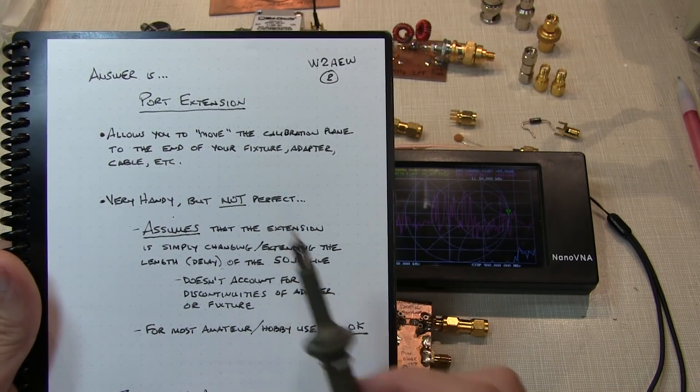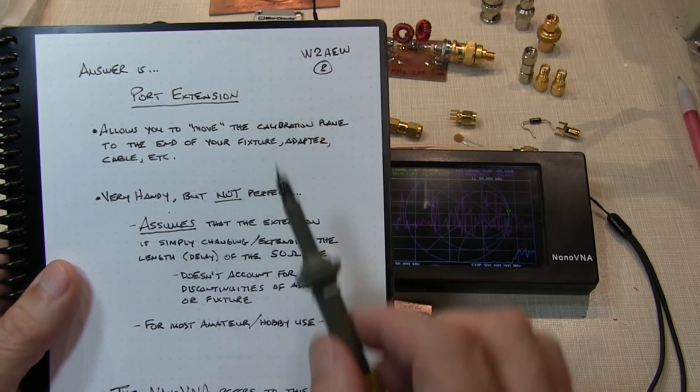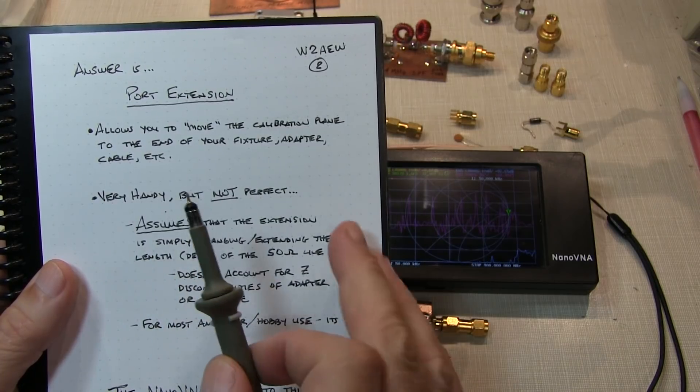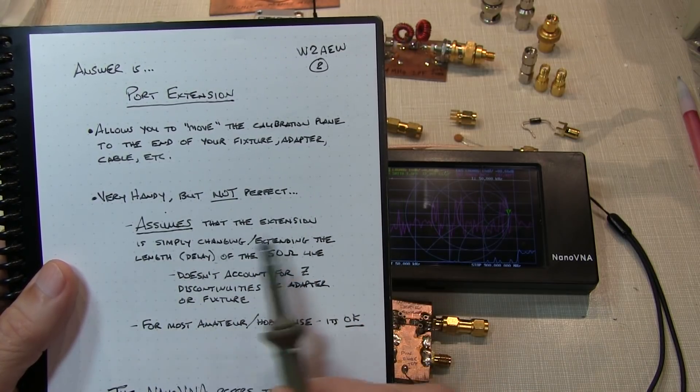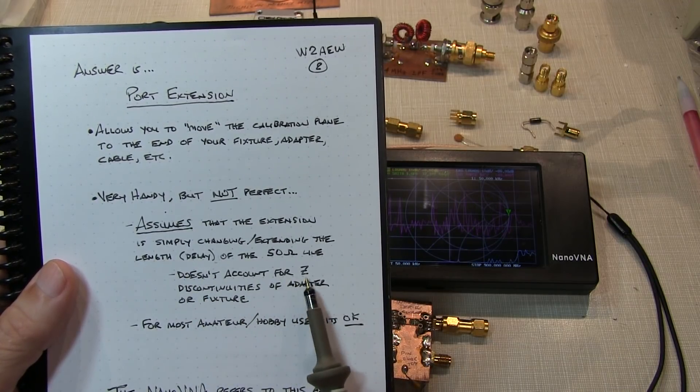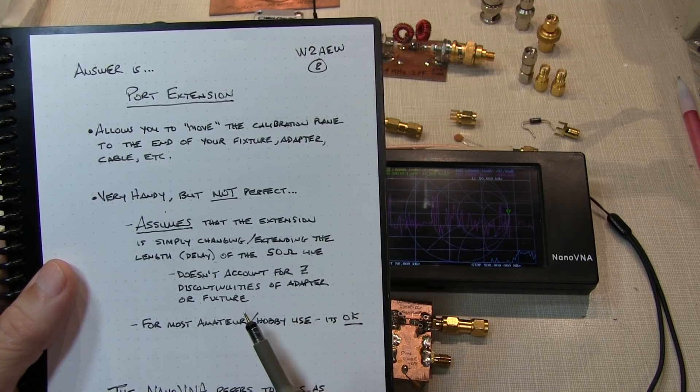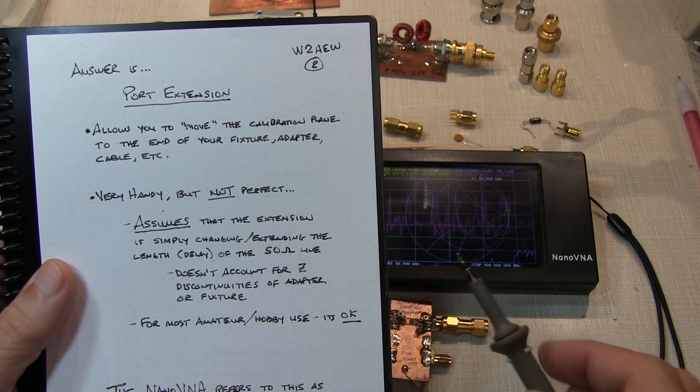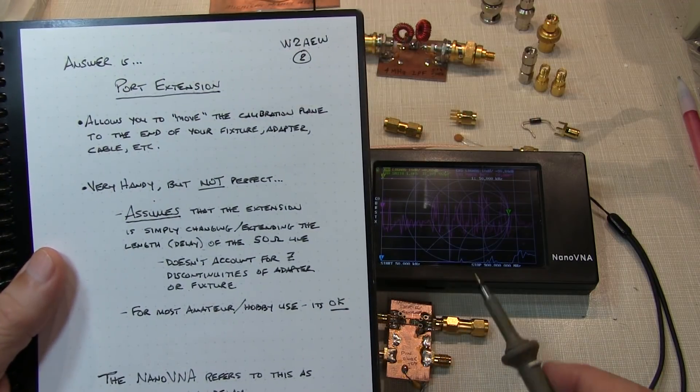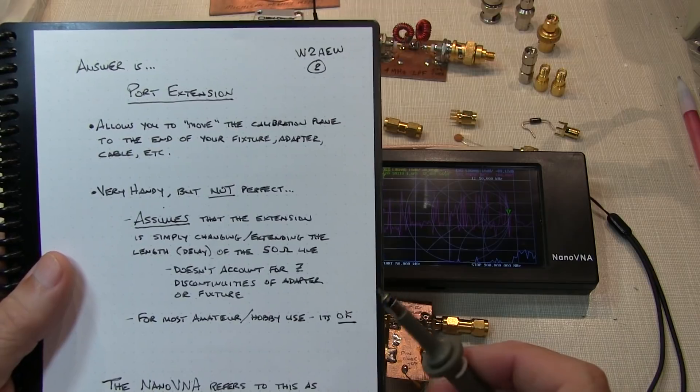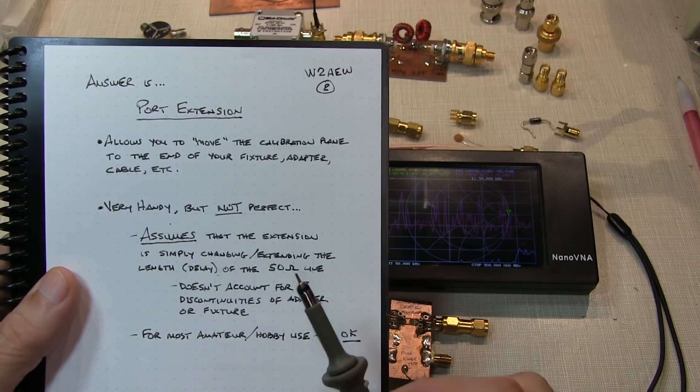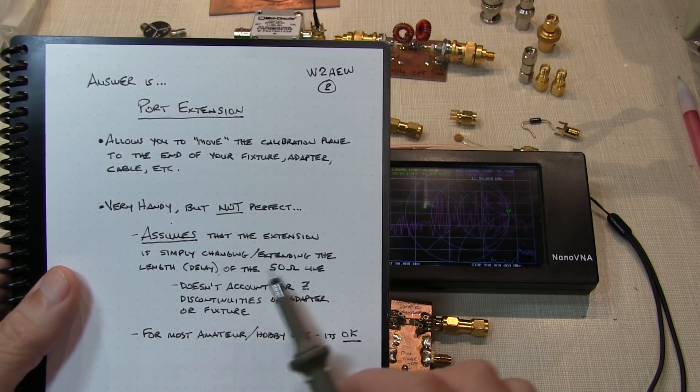Now, this can be very handy, but it's not perfect, because this port extension really assumes that the extension or the movement of that plane is simply an extension of the 50-ohm line that was already part of the VNA itself. It doesn't take into account any impedance discontinuities of the adapter or the fixture. So, if you've got kind of an oddball fixture that's got some impedance bumps in it, or the adapters are a little bit unusual, or you're going to some flying leads on the output of an RF connector, it's not going to account for that impedance change.